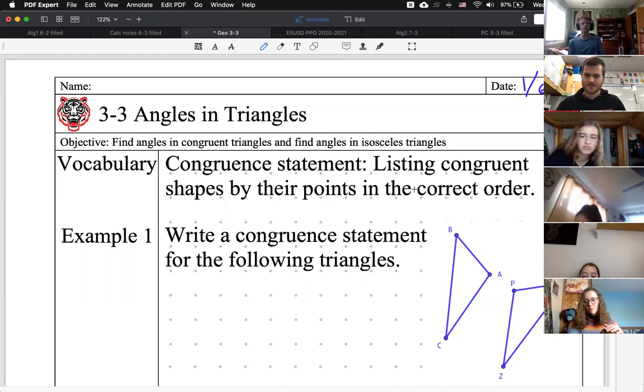Yes, Asha. Find angles in congruent triangles and find angles in isosceles triangles. There it is. An isosceles is a fun word to spell. It's I-S-O-S-C-E-L-E-S.